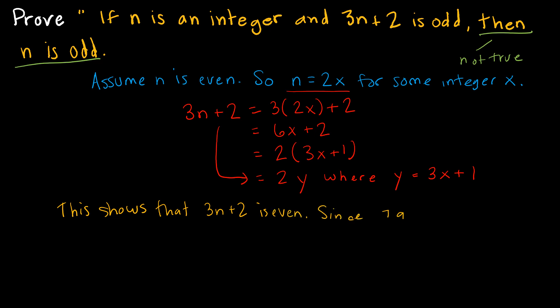Since not Q, if not Q then not P is true, then if P then Q is true. Or going back to what we started with, if N is an integer and 3N plus 2 is odd, then N is odd.